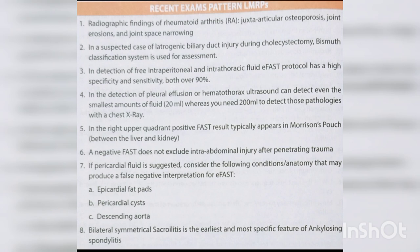In detection of pleural effusion or hemothorax, ultrasound can detect as little as 20 mL of fluid, whereas chest X-ray requires approximately 200 mL. In the right upper quadrant, a positive FAST result typically appears in Morrison's pouch between the liver and kidney. A negative FAST does not exclude intra-abdominal injury after penetrating trauma. If pericardial fluid is suggested, consider epicardial fat pads and pericardial cyst as sources of false-negative EFAST interpretation.